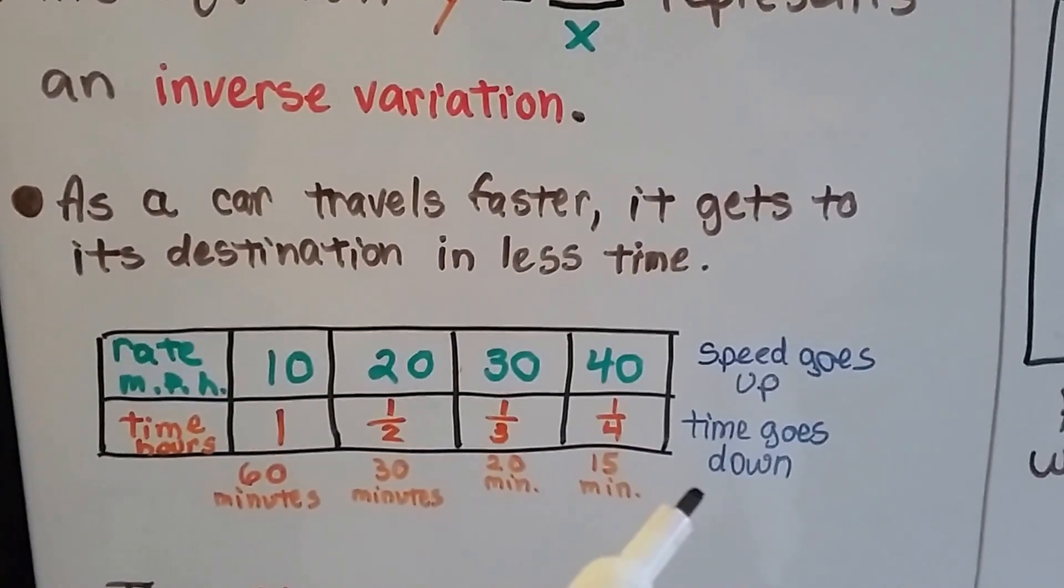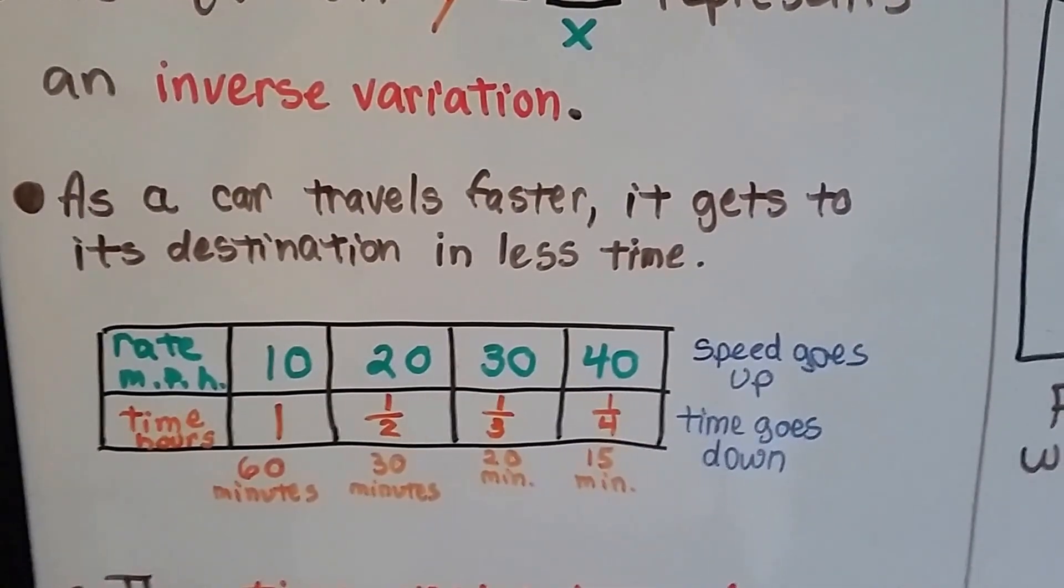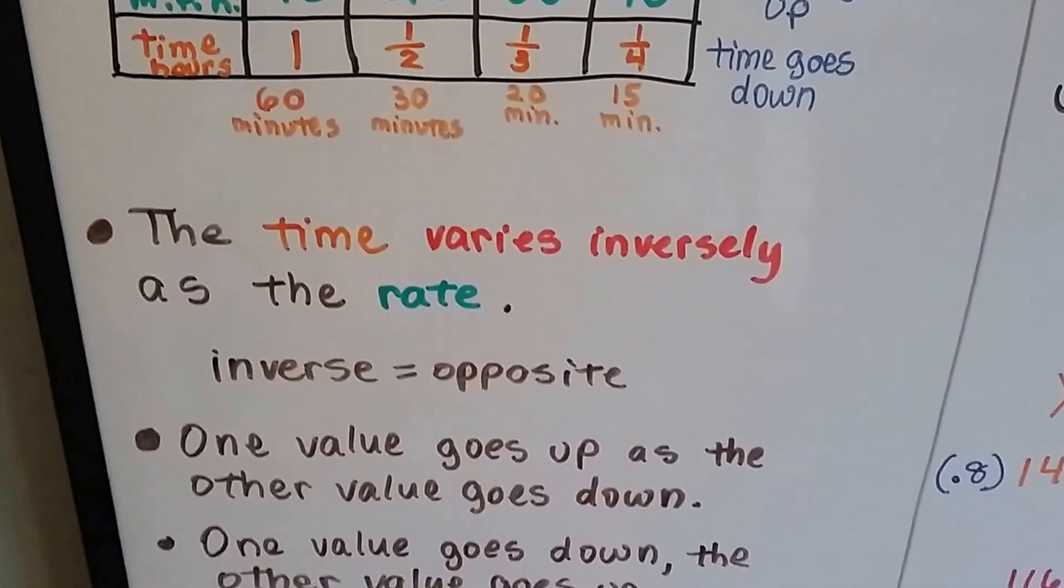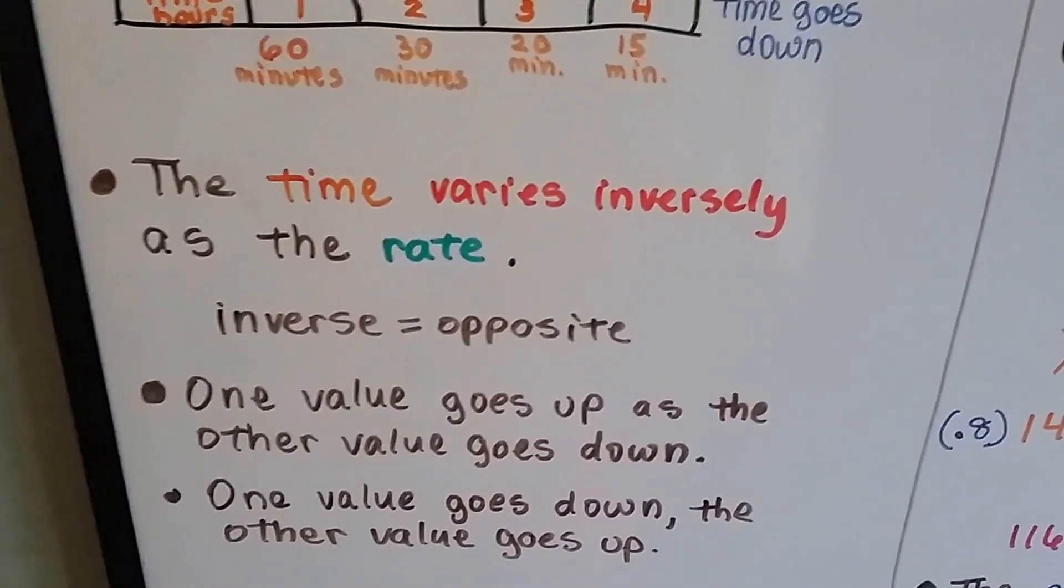So as our speed goes up, the time it takes to get there goes down. That's an inverse variation. The time varies inversely as the rate. Inverse means opposite.